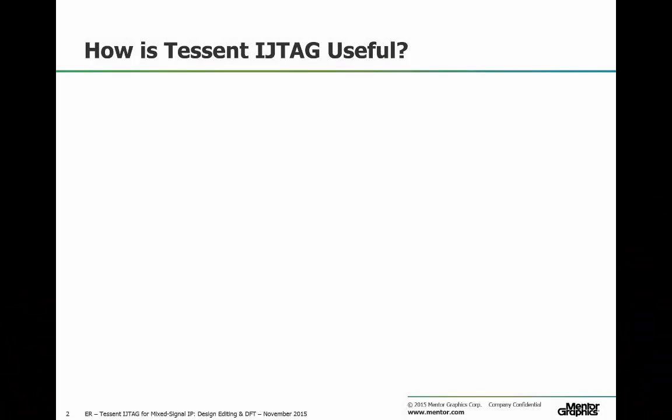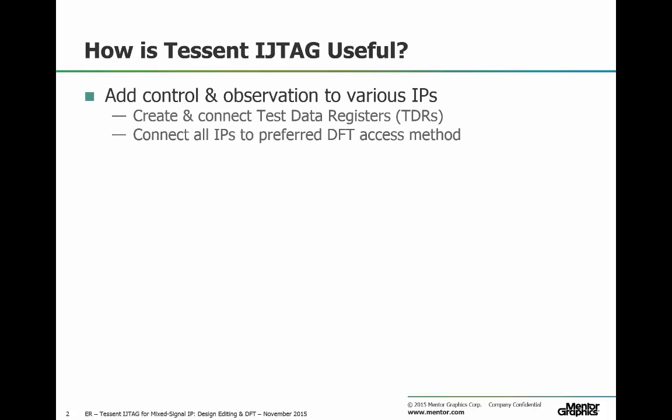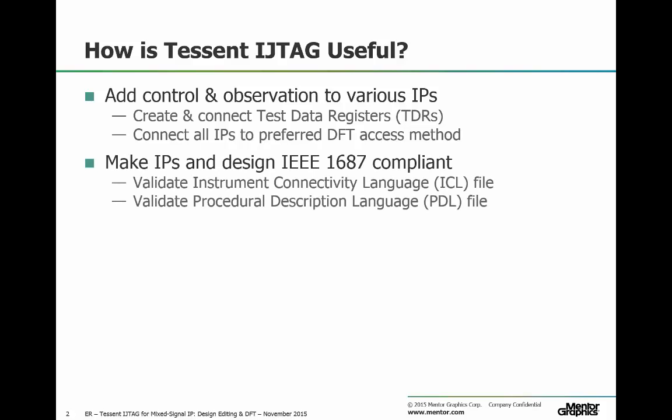One of the tasks that DFT engineers often need to do is add control and observation points to different IPs, for example mix signal devices. With Tessent iJTAG you can do this automatically. You can also make IPs in your design IEEE 1687 compliant — that's iJTAG.